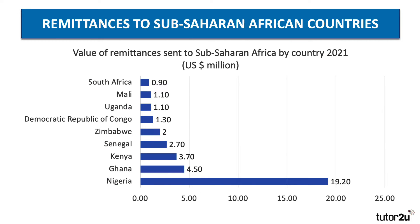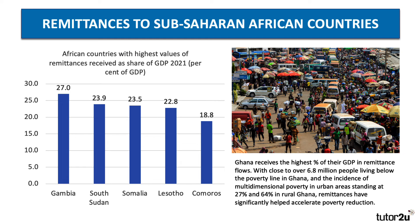In sub-Saharan Africa, Nigeria leads the way in terms of the value of remittances — just under 20 billion US dollars in 2021. And if we measure as a share of GDP, which is perhaps the best guide to the scale of remittances, it's the Gambia which receives the highest at 27 percent. South Sudan, Somalia, Lesotho and Comoros are all receiving very high percentages of their national income.